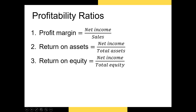We have three primary measures of profitability in finance. There are others out there, but everyone knows these three. The first is the profit margin, and that's simply net income divided by total sales. It represents how much of every dollar of revenue is profit — it goes to your bottom line, in other words.